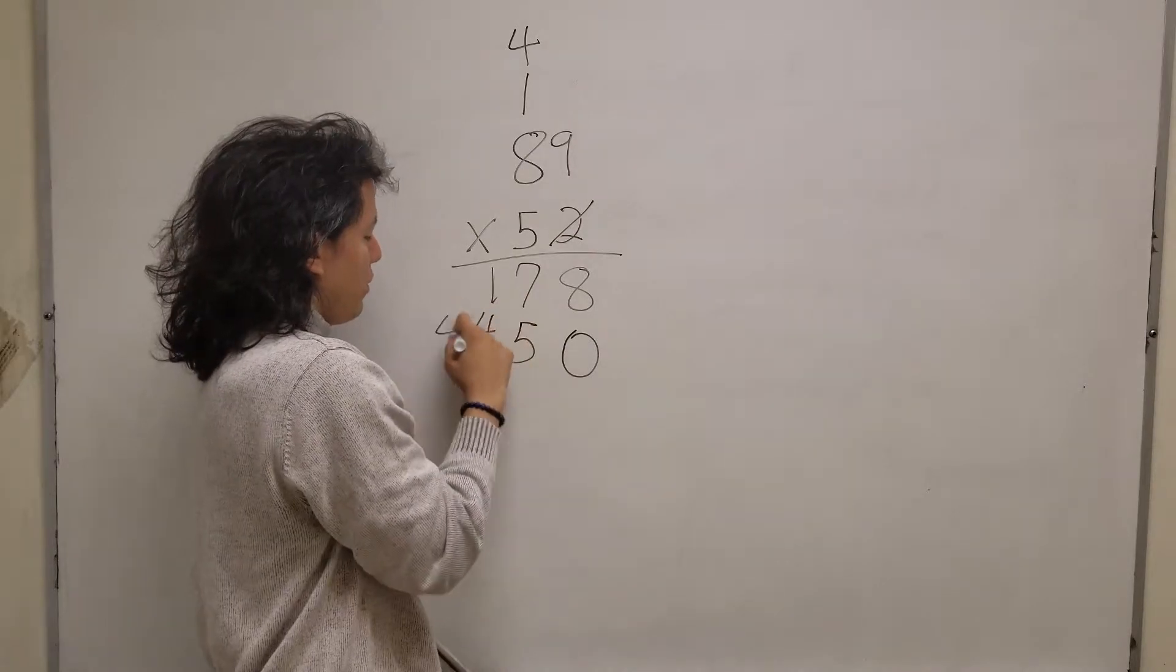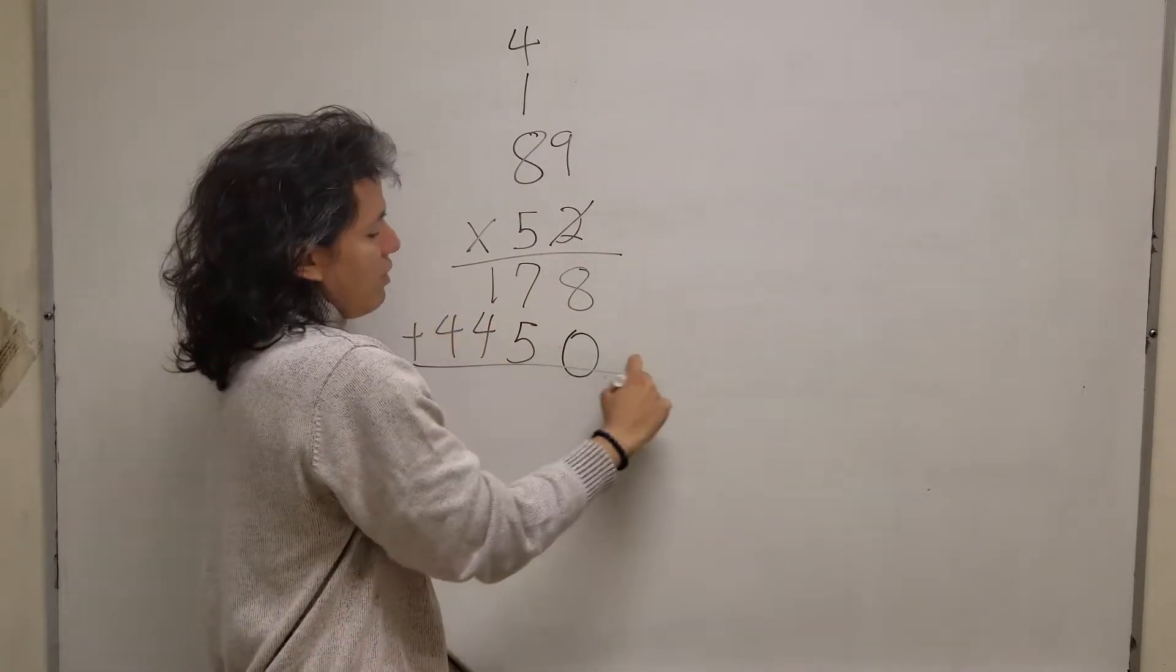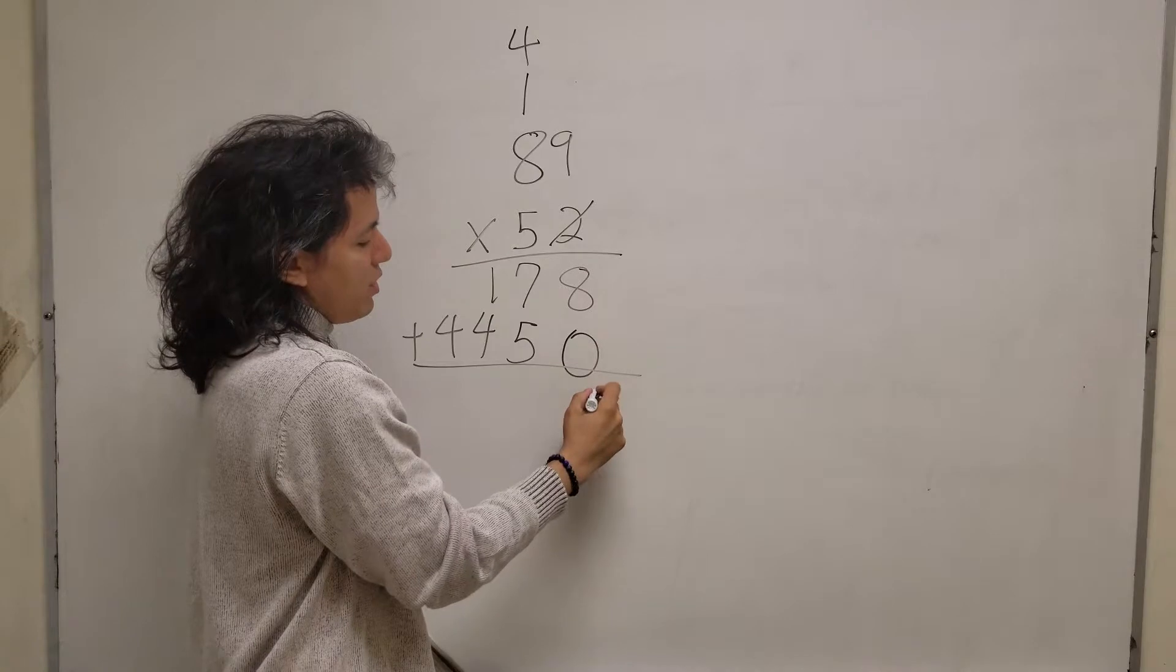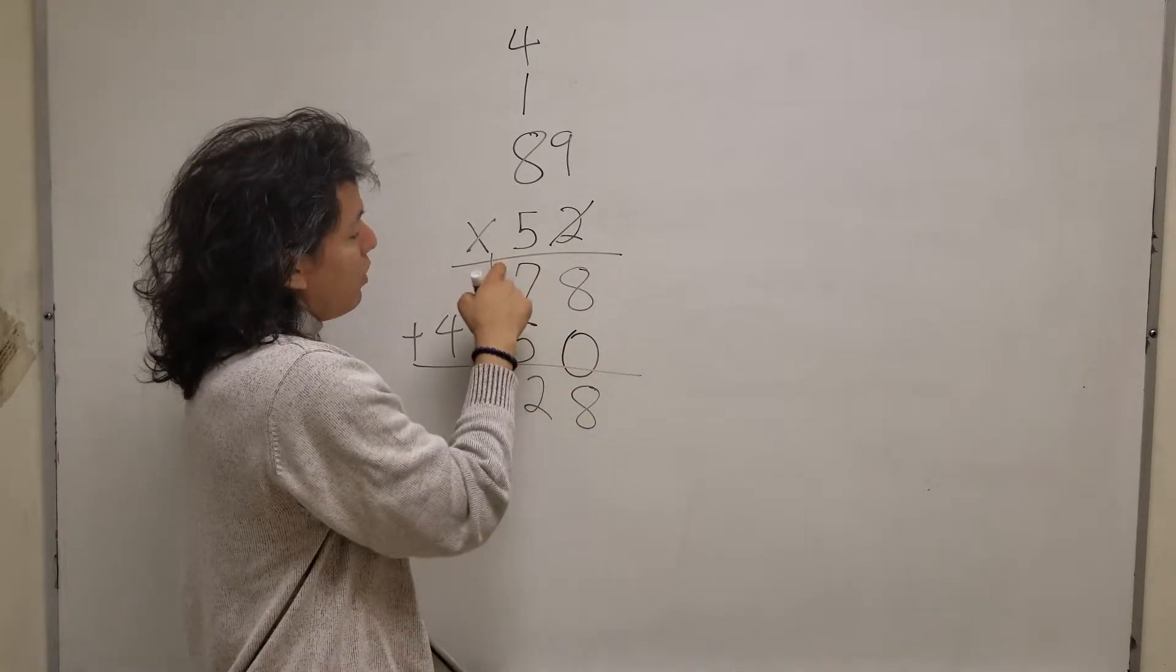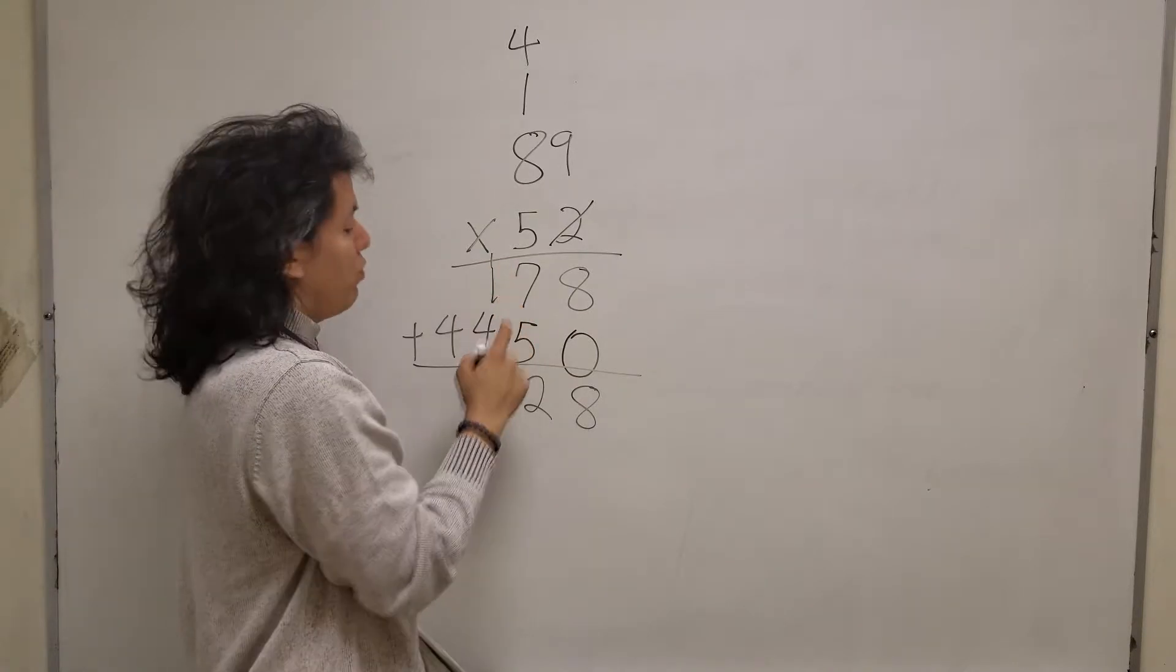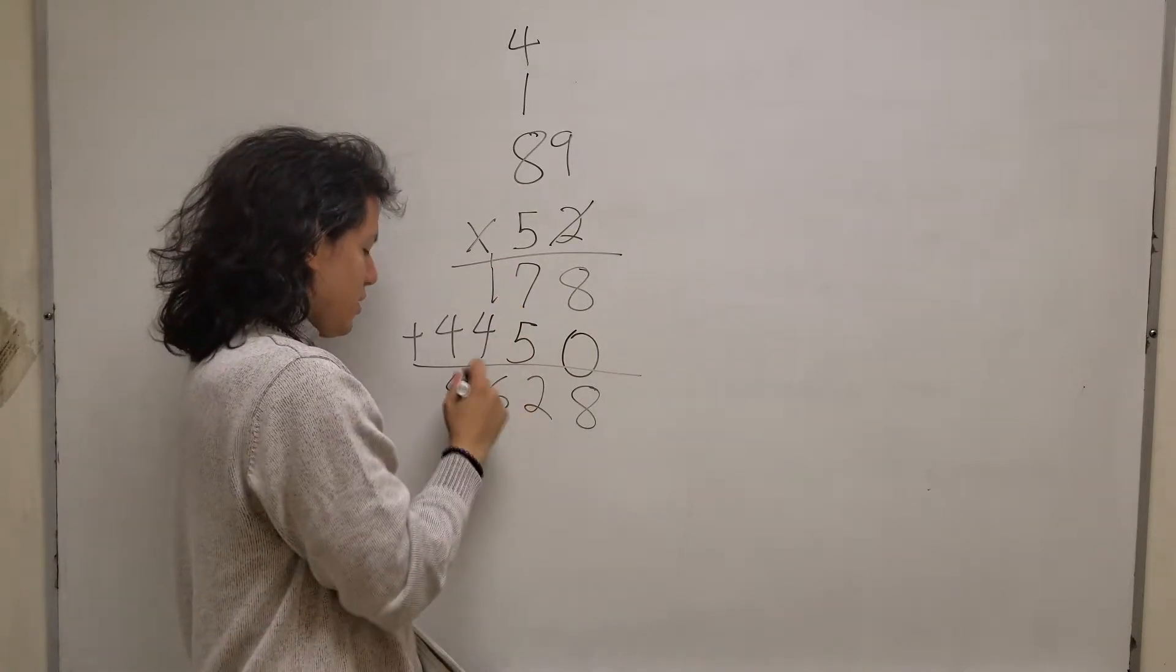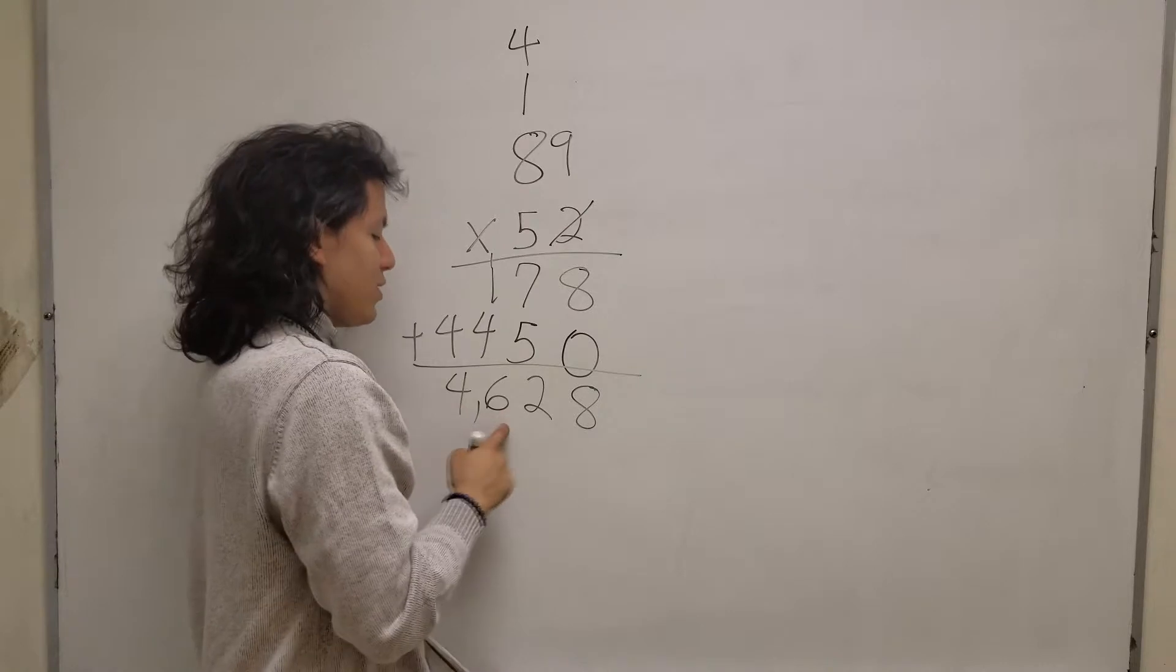Now you add everything up. 8 plus 0 is 8. 7 plus 5 is 12, 1 plus 1 is 2 plus 4 is 6. I'm going to get 4628.